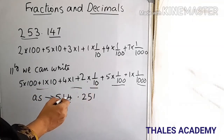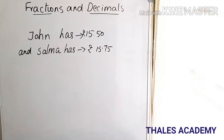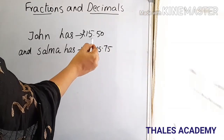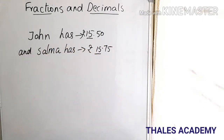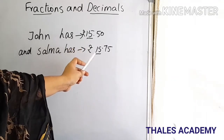Here is a problem: John has rupees 15.50 and Salma has rupees 15.75. Who has more money? To find this, we need to compare the decimal numbers 15.50 and 15.75. We first compare the digits on the left of the decimal point, starting from the leftmost digit. Here both leftmost digits are the same.